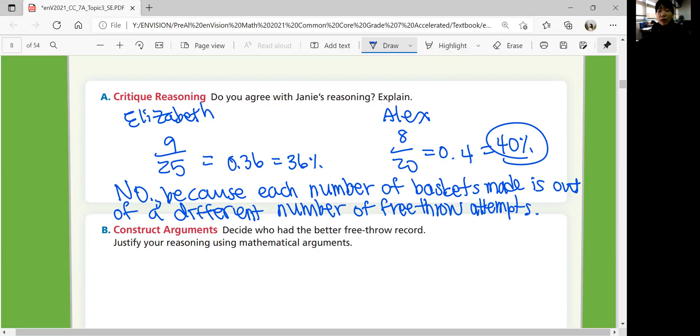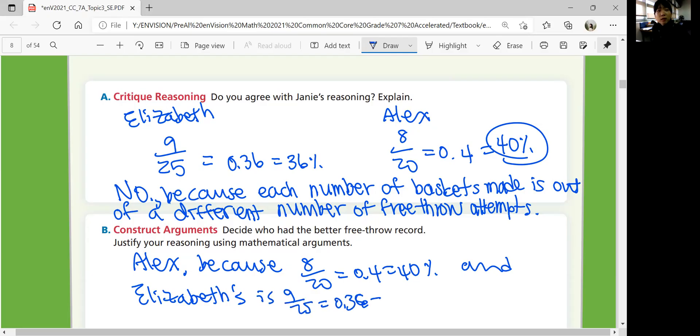So decide who had a better throw record. Alex, because 8 out of 20 is equal to 0.4, which is 40%. And Elizabeth is 9 over 25, which is 0.36, and that's 36%. And 40% is greater than 36%.